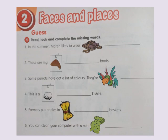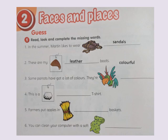Now open your workbooks. Module 2: Faces and Places, Lesson 1: Guess. Activity 1 — read, look and complete the missing words. Number one: in the summer, Martin likes to wear sandals. Number two: these are my leather boots. Number three: some parrots have got a lot of colors — they are colorful. Number four: this is a cotton t-shirt. Number five: farmers put apples in straw baskets. Number six: you can clean your computer with a soft cloth.